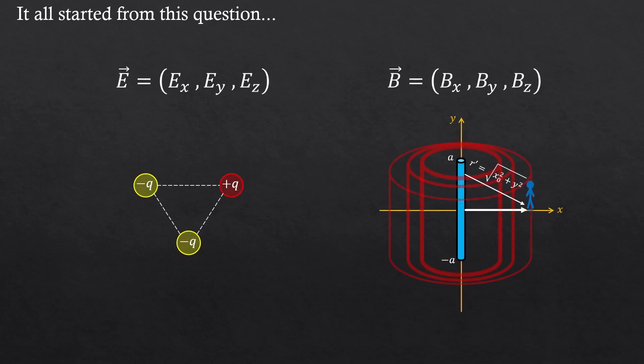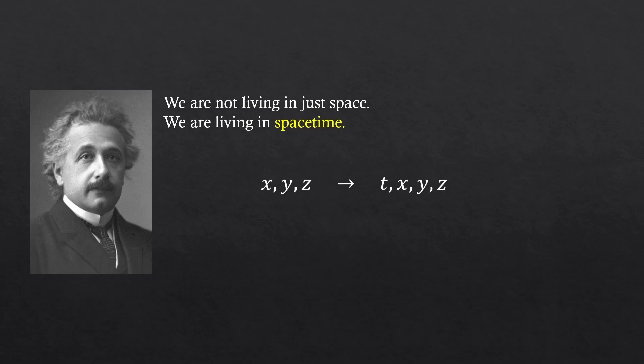It all started from this question. Back in your first E&M course, you're solving these kind of problems, right? Finding the electric potential energy or magnetic field, etc. But these were all time-independent problems. How about the time-dependent cases then? Our world is not static. Time is flowing. Albert Einstein said we aren't living in just space. We're living in space-time. See where I'm trying to get? Electrodynamics must be described with four space-time elements, not just three space elements.